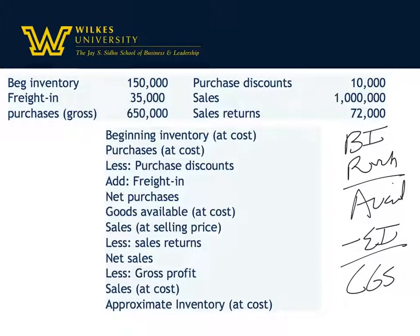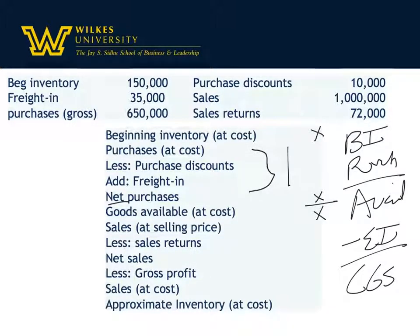When we talk about purchases, there are some things we add to it. In this case, we're going to talk about purchases, and then you might have a purchase discount and freight in — you had to pay for shipping. Those all come together to become the net purchases. So our formula is: beginning inventory plus net purchases gives you goods available, and then we subtract out ending inventory to get cost of goods sold.